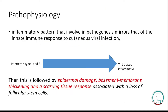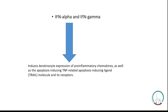Pathophysiology: the inflammatory pattern involved in the pathogenesis of discoid lupus erythematosus mirrors that of the innate immune response to cutaneous viral infection. The interferon response is an innate immune response; type I and type III interferons are produced in DLE patients, which trigger a Th1-biased inflammation. This is followed by epidermal damage, basement membrane thickening, and a scarring tissue response associated with loss of follicular stem cells. There is also interferon alpha and interferon gamma production.